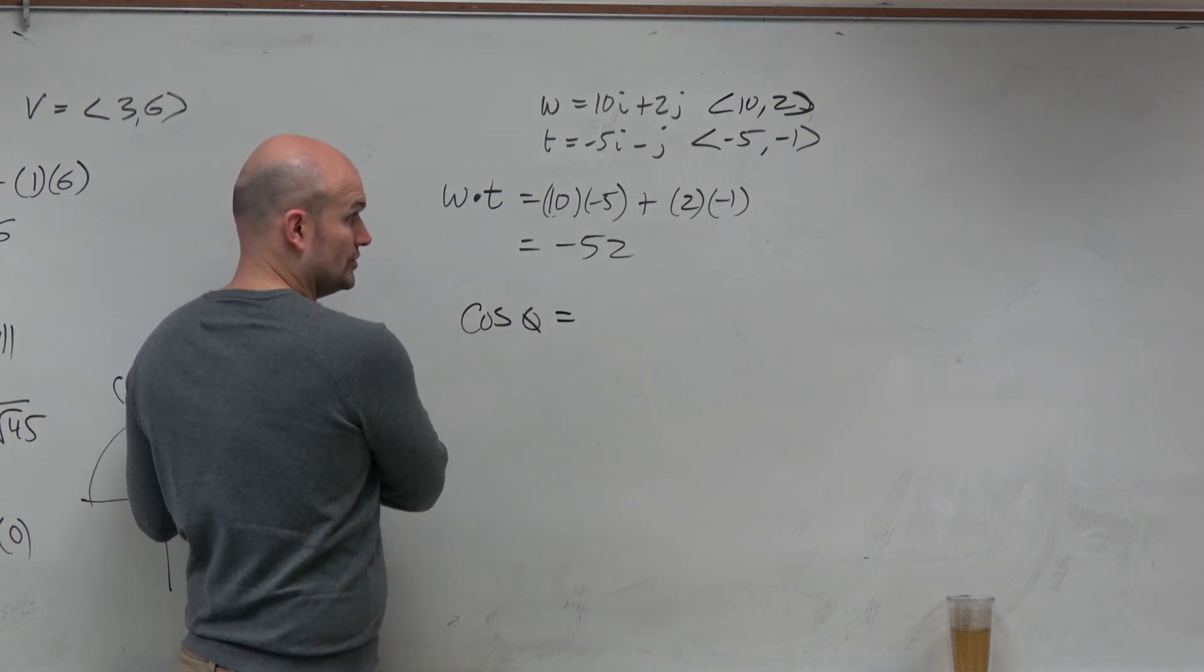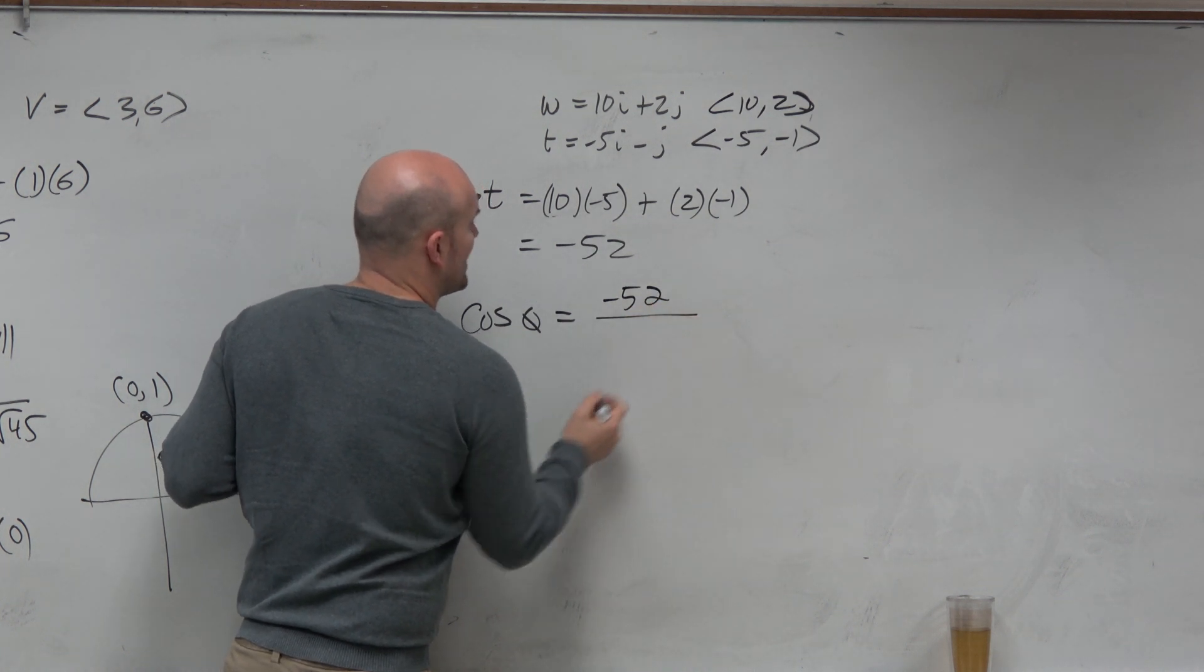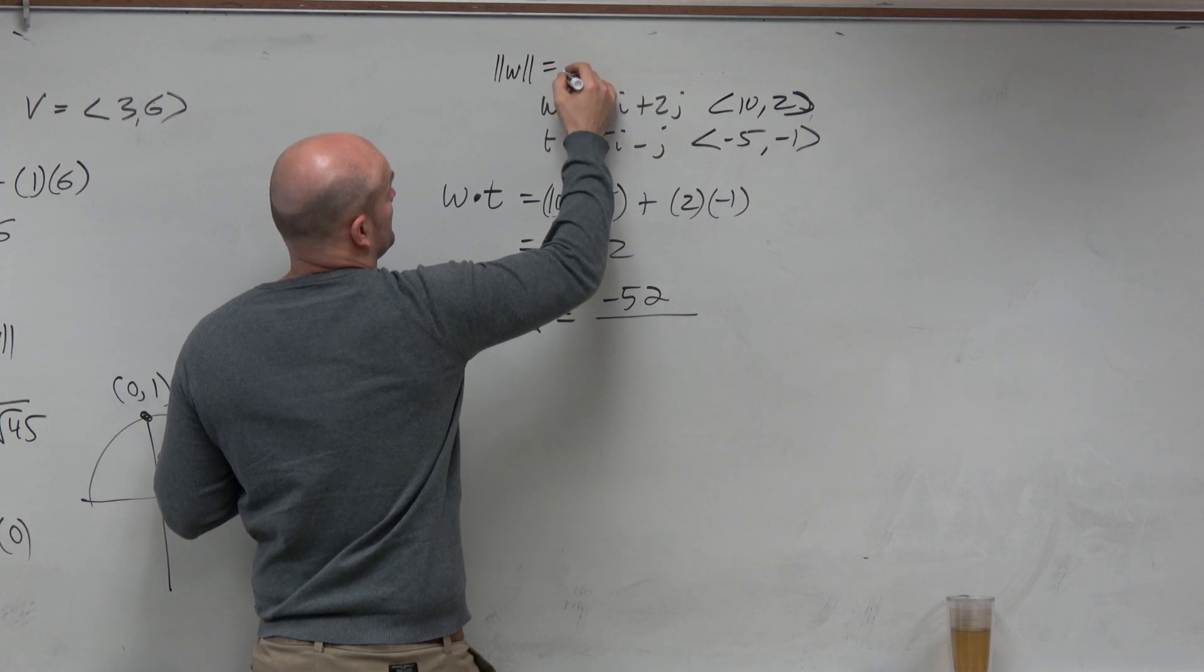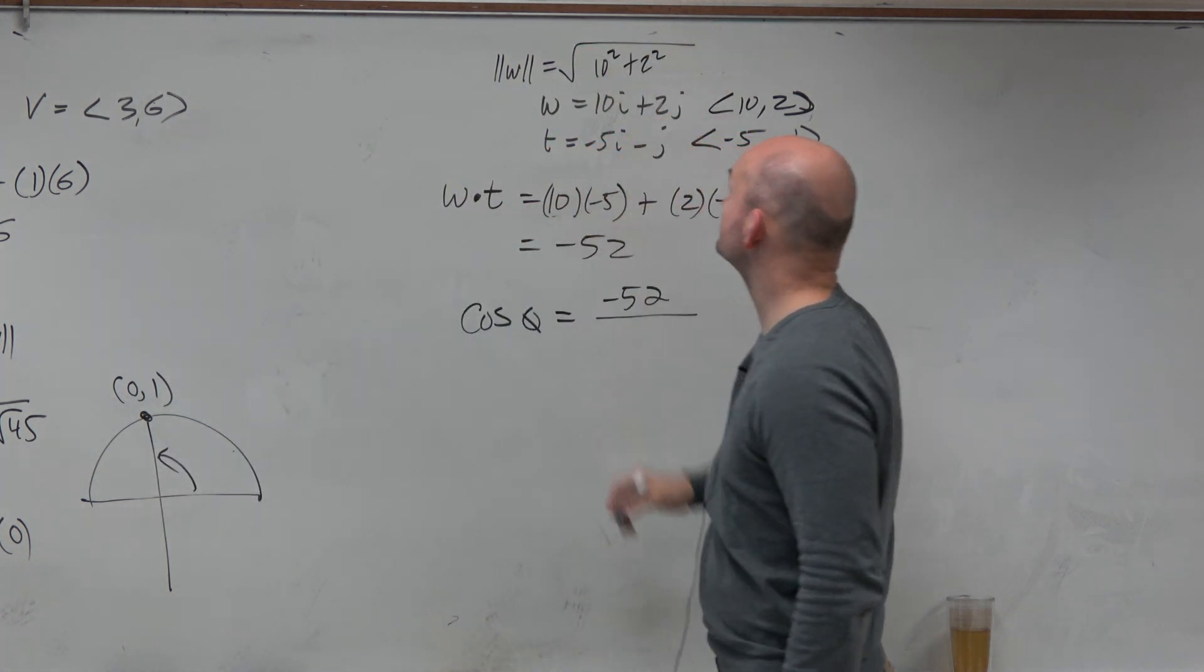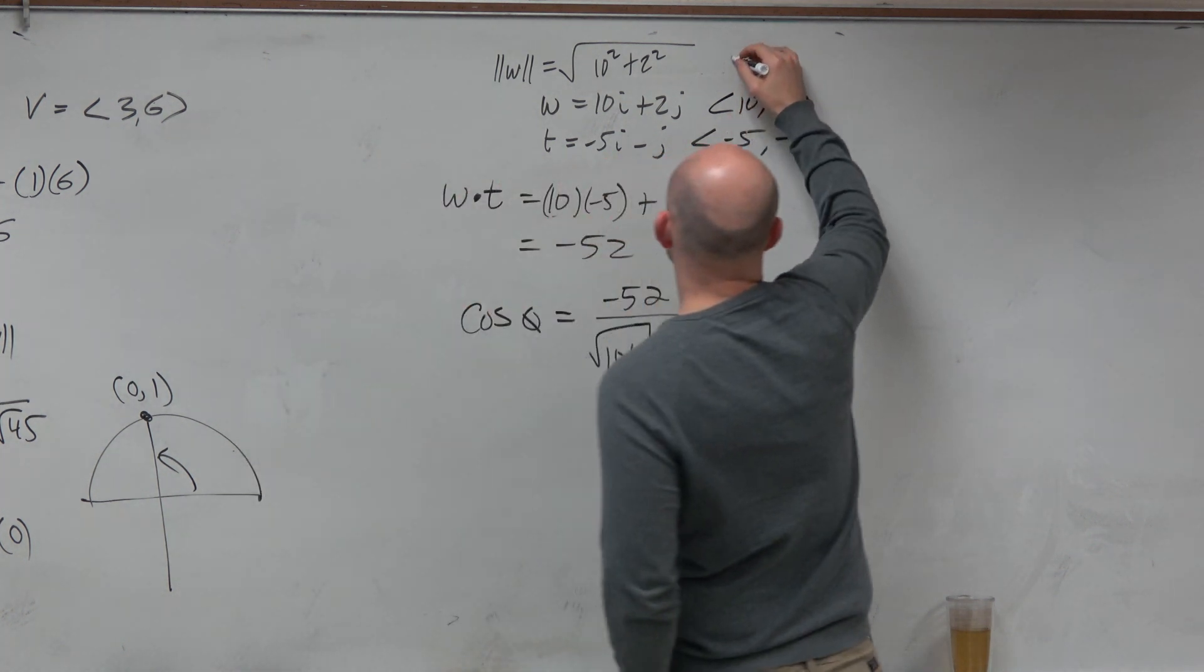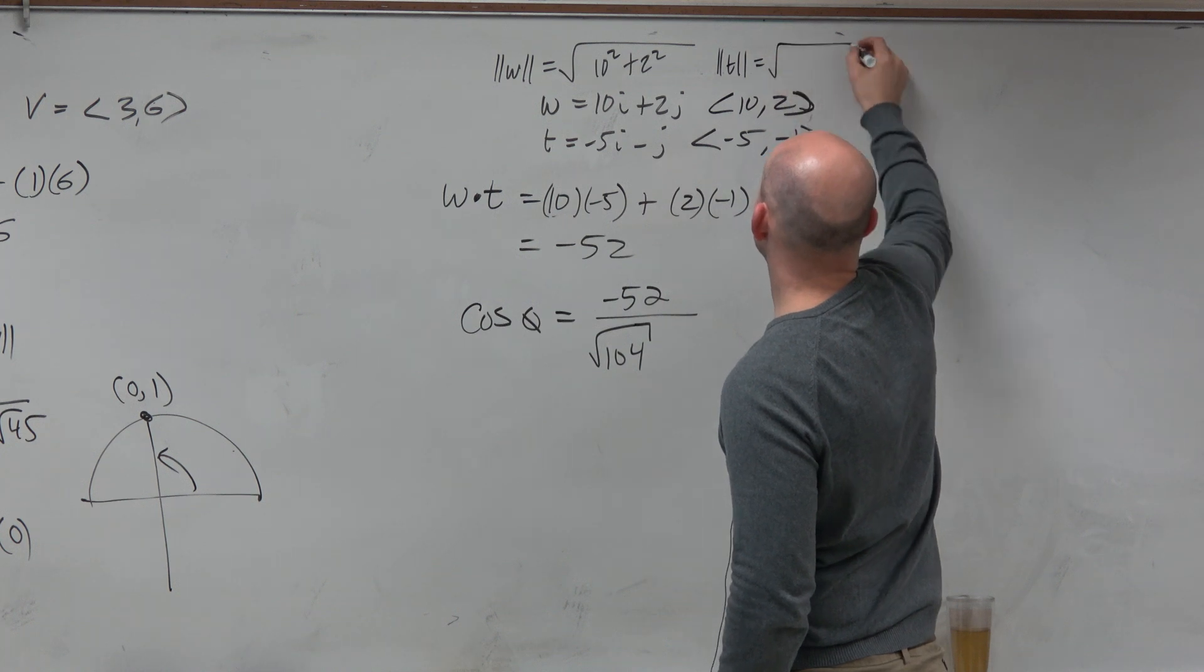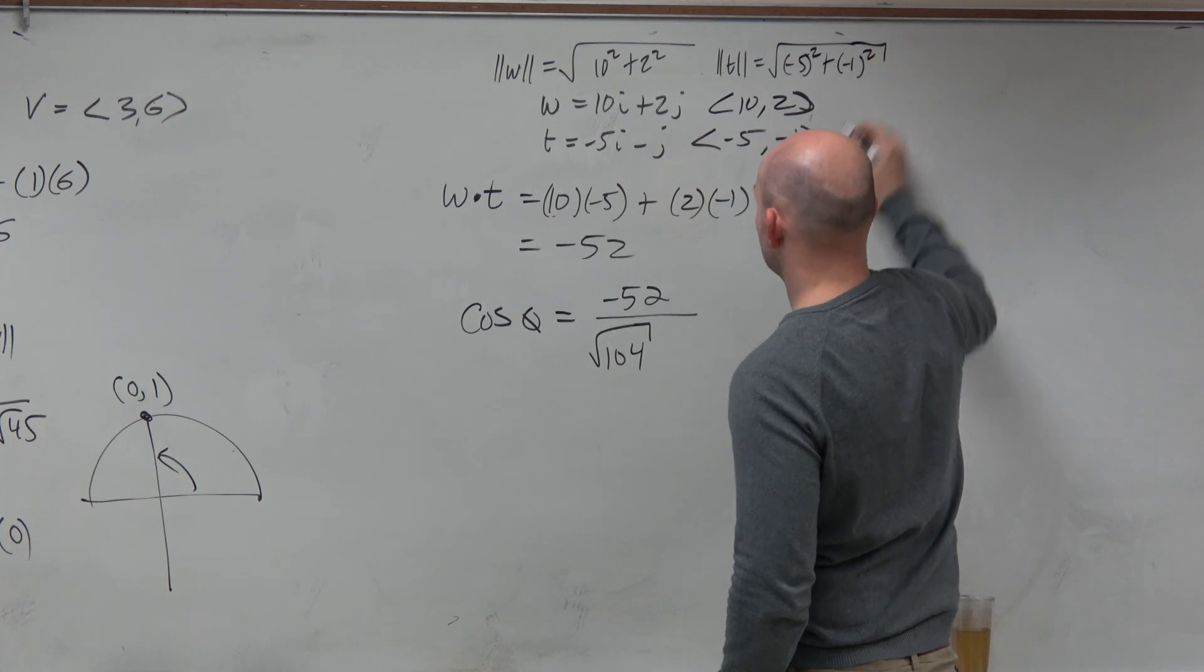Cosine of theta is equal to the dot product. So that's going to be negative 52 divided by the magnitude of W. So let's figure out what the magnitude of W is. That's going to be 10 squared plus 2 squared. Square root of 104. And then the next one, the magnitude of T. That's going to be the square root of negative 5 squared plus negative 1 squared. 26.